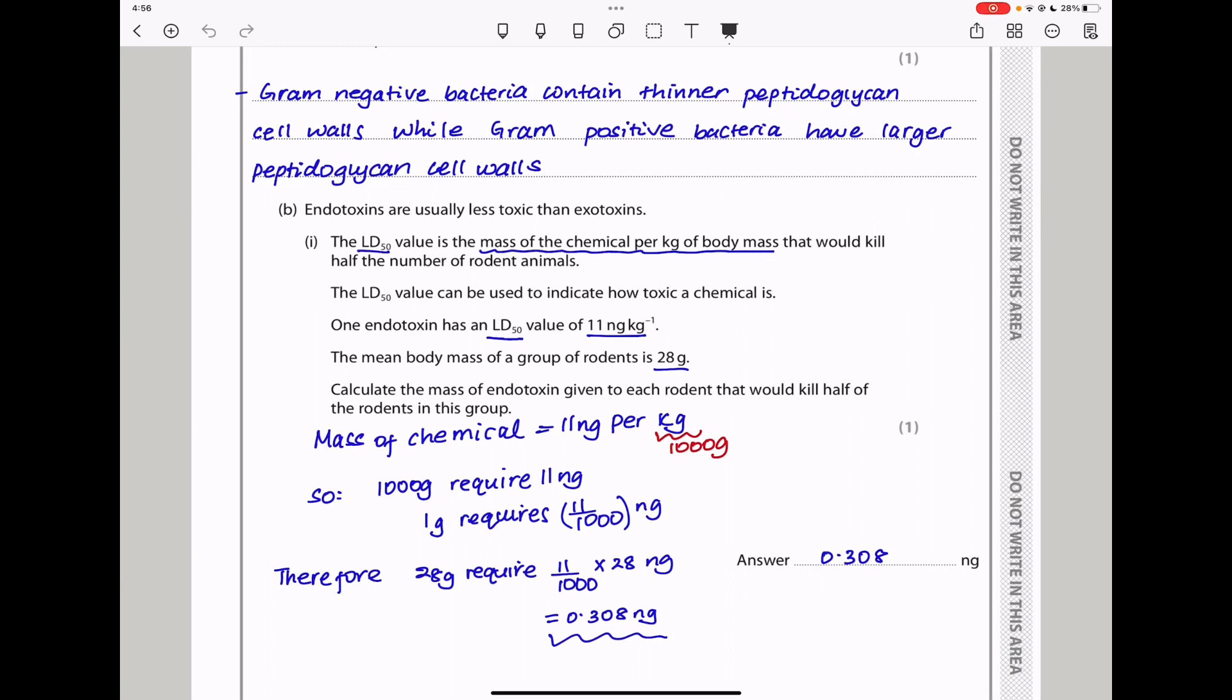The next part says endotoxins are usually less toxic than exotoxins. The LD50 value is the mass of the chemical per kilogram of body mass that would kill half the number of rodent animals. The LD50 value can be used to indicate how toxic a chemical is. One endotoxin has an LD50 value of 11 nanograms per kilogram, and the mean body of a group of rodents is 28 grams. They want us to calculate the mass of endotoxins given to each rodent that would kill half of the rodents in this group. The mass of the chemical is 11 nanograms per kilogram. A kilogram is a thousand grams, so 1000 grams will require 11 nanograms, and 1 gram will require 11 divided by 1000. Now 28 grams will require 11 over 1000 times 28, and that gives us 0.308 nanograms. So that should be the amount required to kill half of the rodents of this group.